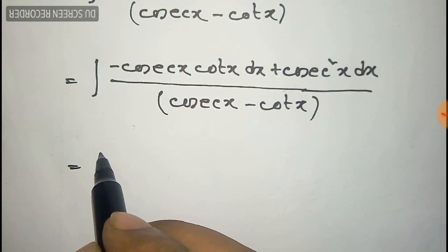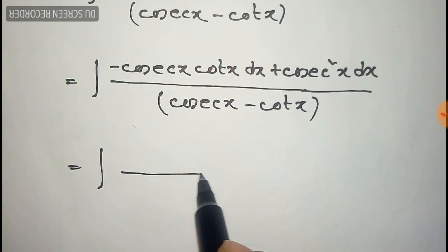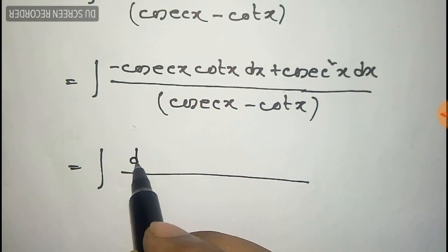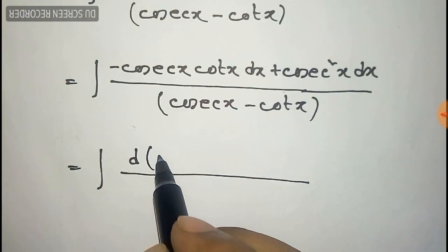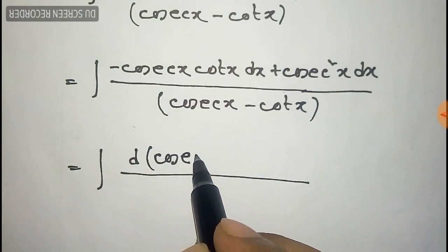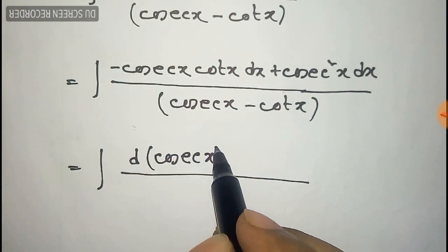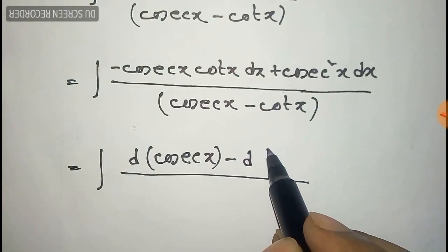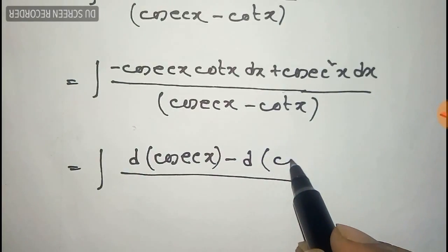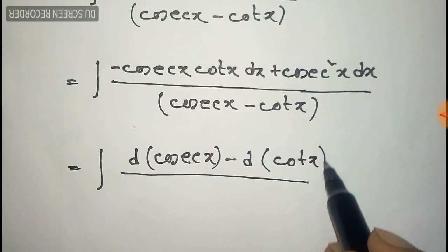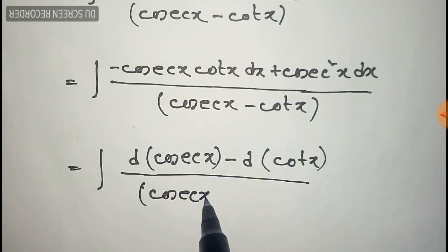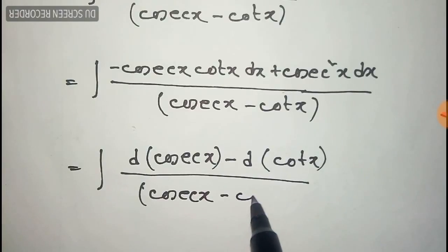Now we can see that minus cosec(x) cot(x) is the derivative of cosec(x), so we can write it as d(cosec x). And cosec squared x is the derivative of minus cot(x), so we can write cosec squared x as minus d(cot x). The denominator part will remain the same.